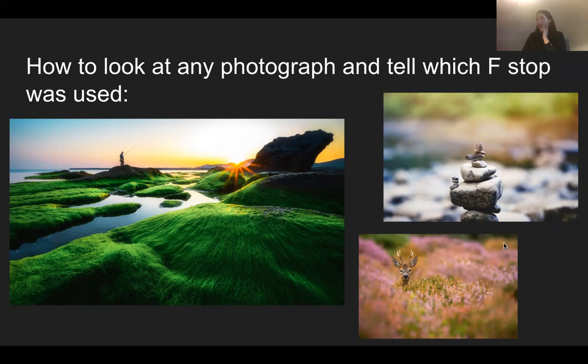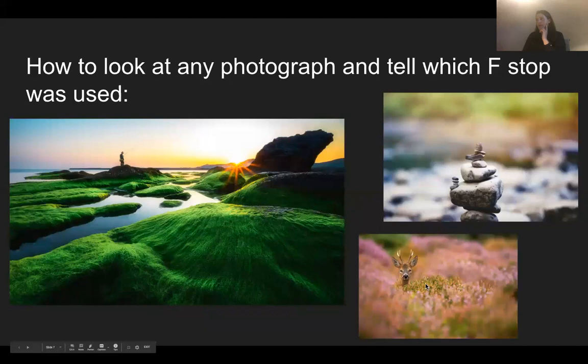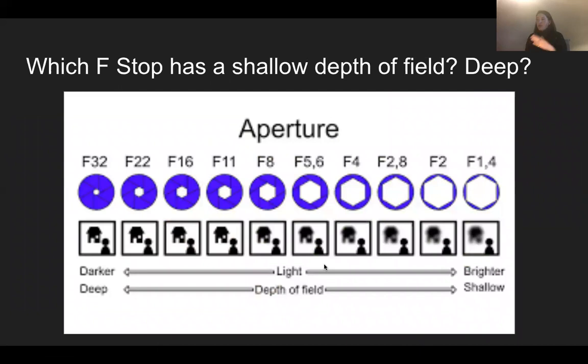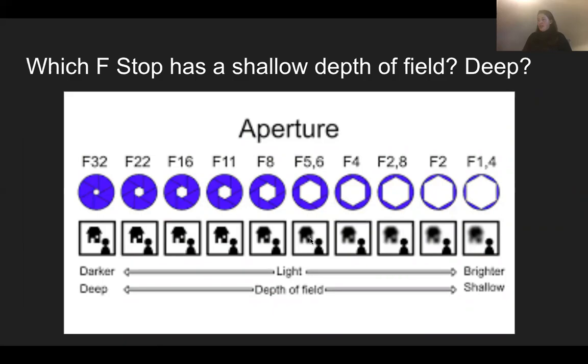We have another one here where everything is blurry in the foreground, you have the captured image in the middle ground, and then blurry in the background. So we might do like an f/16. This object has a really shallow depth of field. You can always refer to this chart and say maybe a 5.6 for this deer sitting in the field.